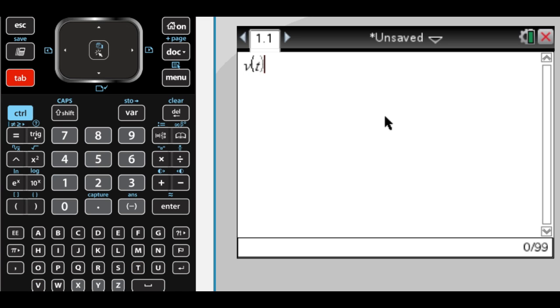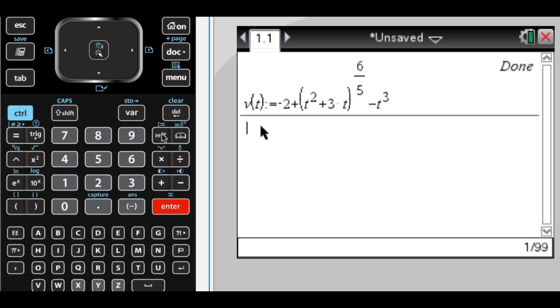The first thing I'm going to do is store the function. So v of t is set equal to negative 2 plus the quantity t squared plus 3t to the 6 fifths power, and then minus t cubed. And it says done, which means I've stored it.